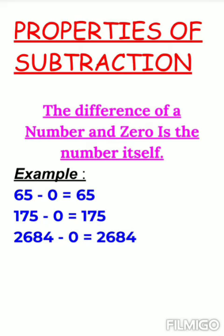As an answer, which is written on the top. For example, 65 minus 0 is equal to 65, 175 minus 0 is equal to 175, 2684 minus 0 is equal to 2684. So like this, you will be doing worksheet 5 in your book.